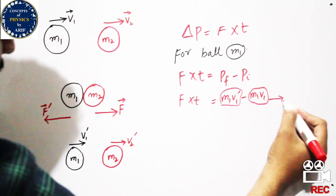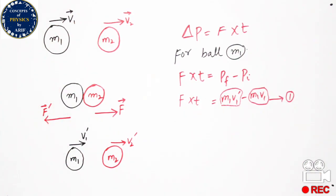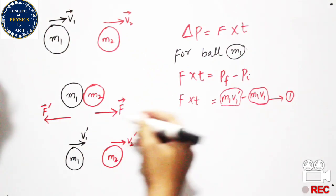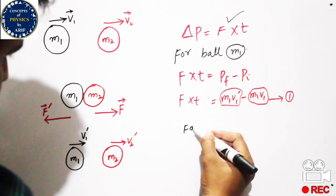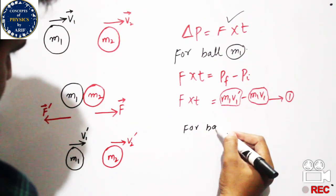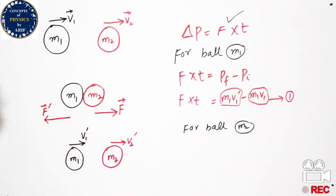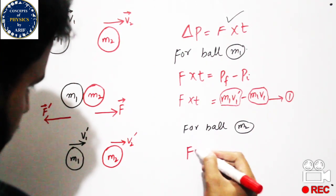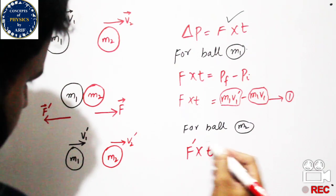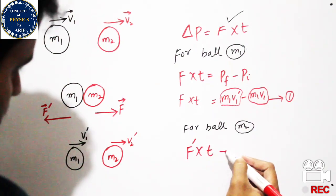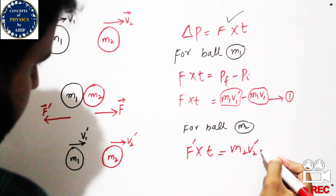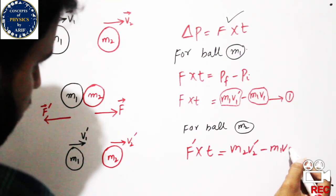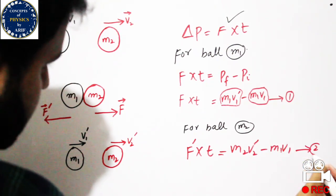We call this Expression 1. Now we solve the expression for ball m2. This gives us: F prime cross t is equal to m2 v2 prime minus m2 v2. This is Expression 2.